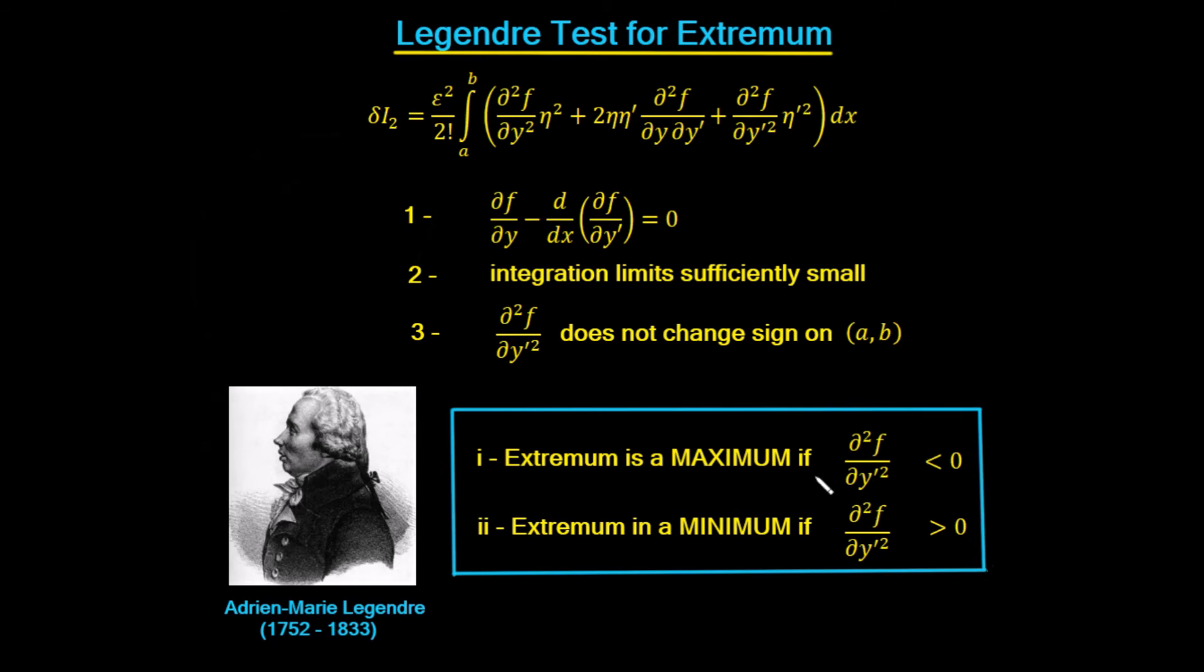So the Legendre test simplifies this second variation down such that we can tell whether the extremum is a maximum or a minimum simply by finding the second variation and then just looking at this part of the second variation, which is the coefficient here of this η derivative squared. So it's this part here.